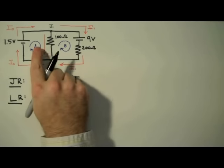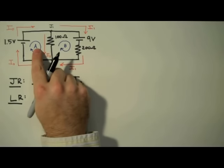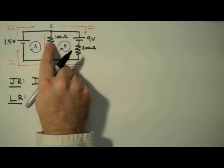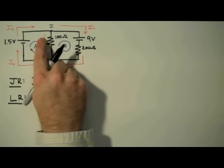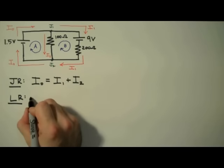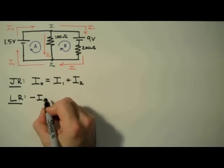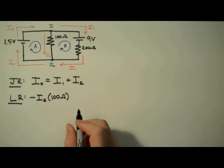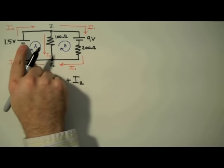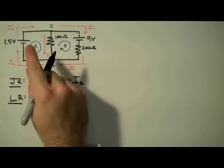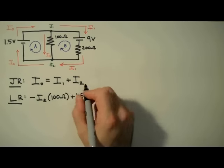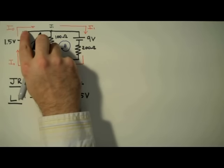Now we apply the loop rule to loop A, which states that the sum of the voltages around a closed loop is equal to 0. Starting in the upper left-hand corner, we're going to move clockwise around loop A. The first component we get to is the 100 ohm resistor. We're traveling clockwise, so we're coming down this leg, moving with the direction of the current — this means we're going to have a voltage drop across the resistor, negative IR. So I'm going to write negative I2 times 100 ohms. We continue clockwise to our next component, the 1.5 volt battery. Here we're moving from low to high, negative to positive — this indicates a voltage lift, positive V. So I write plus 1.5 volts, and that's the last component in this loop, so I set it equal to 0.